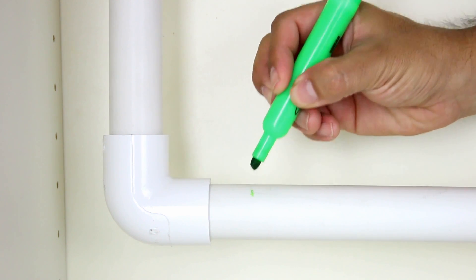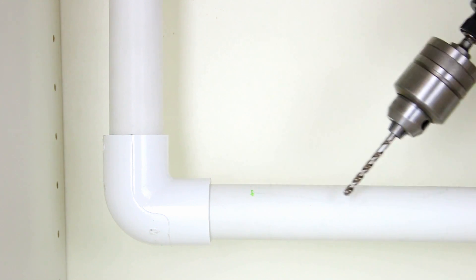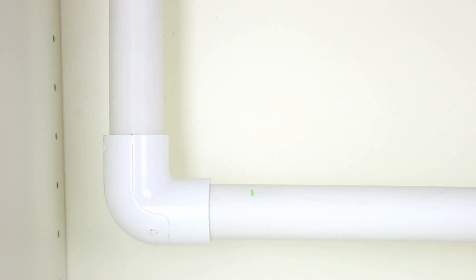Mark the position of the hole on the drain pipe with a pen or marker. Using a power drill, drill a quarter inch hole on the top side of the drain pipe. You now have a quarter inch hole to begin the drain saddle assembly.